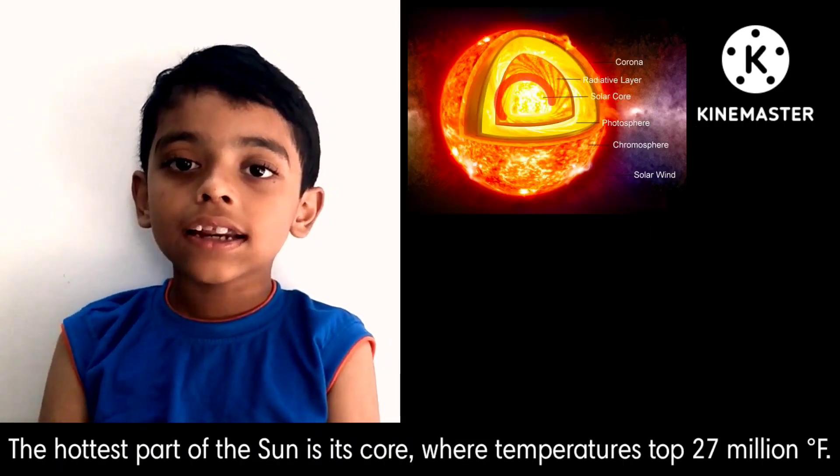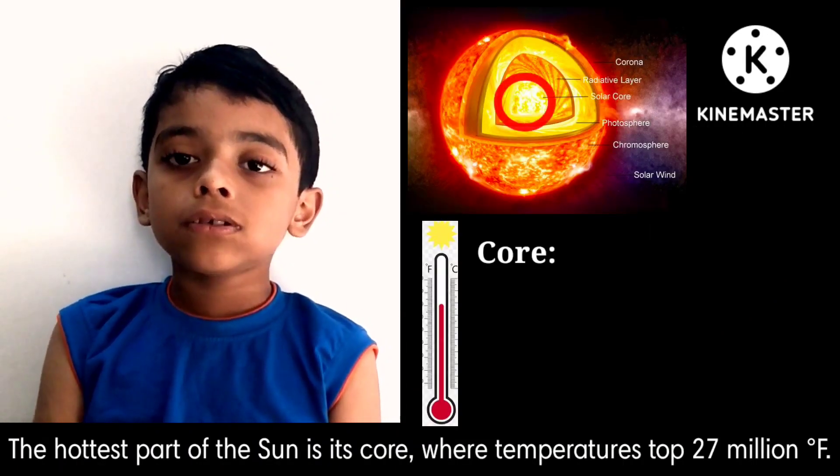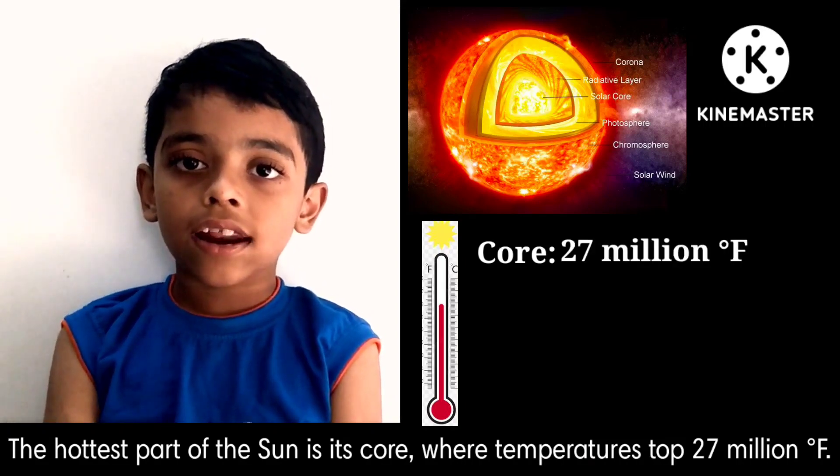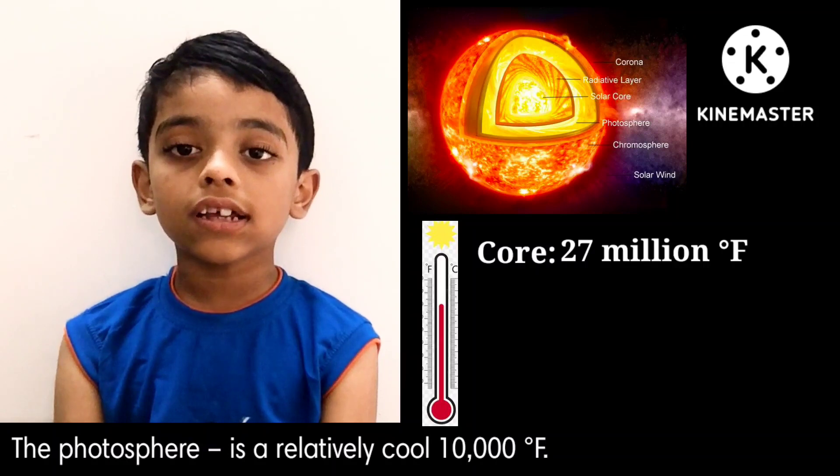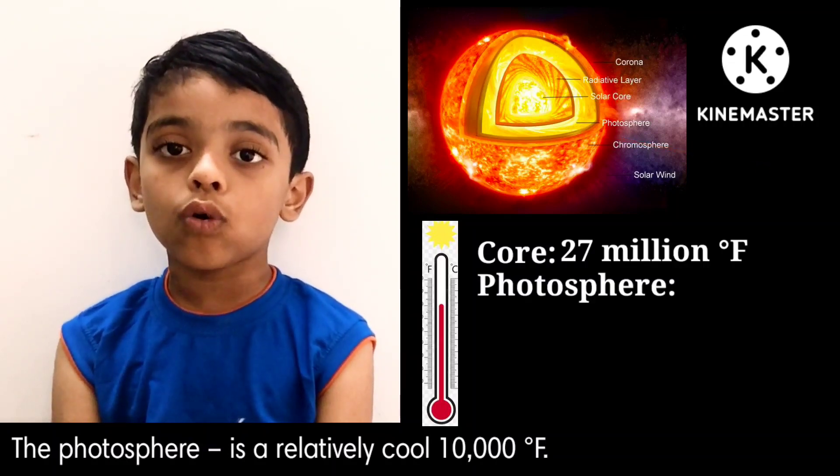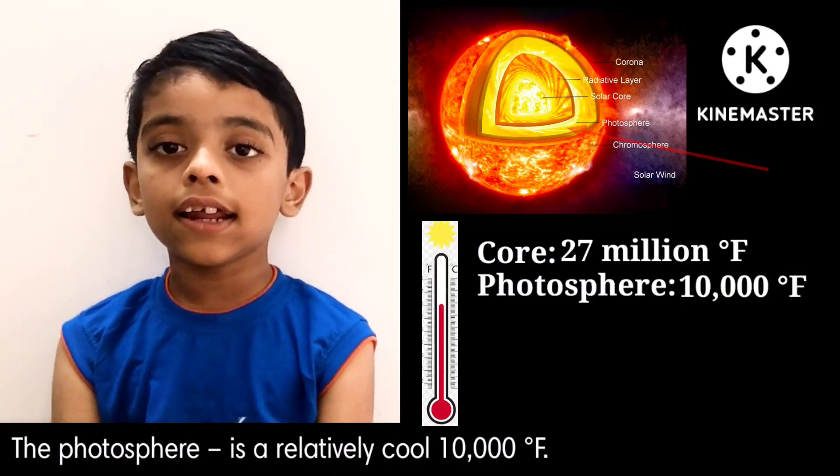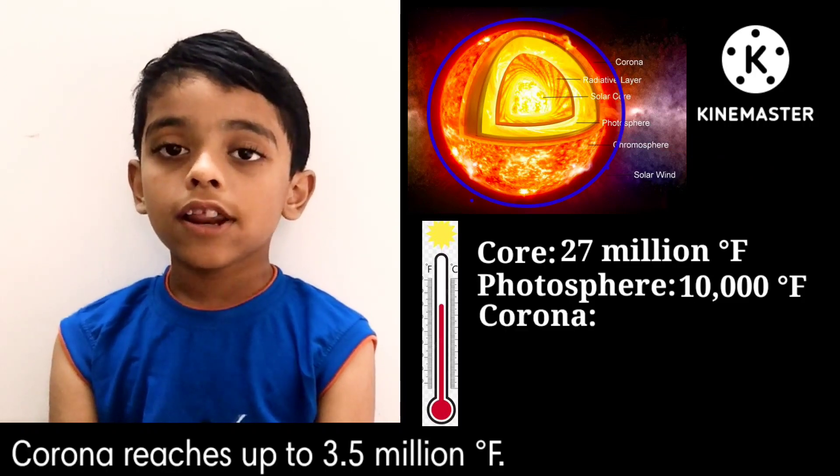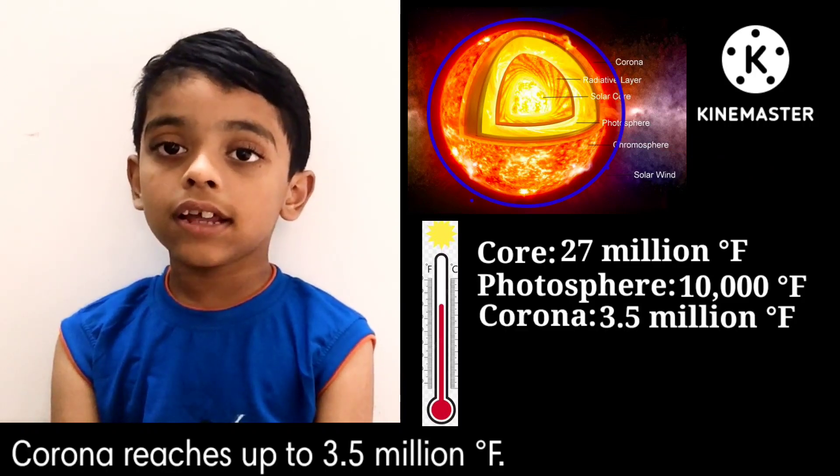The hottest part of the Sun is its core where temperature tops 27 million degrees Fahrenheit. The photosphere is a relatively cool 10,000 degrees Fahrenheit, but the corona reaches up to 3.5 million degrees Fahrenheit.